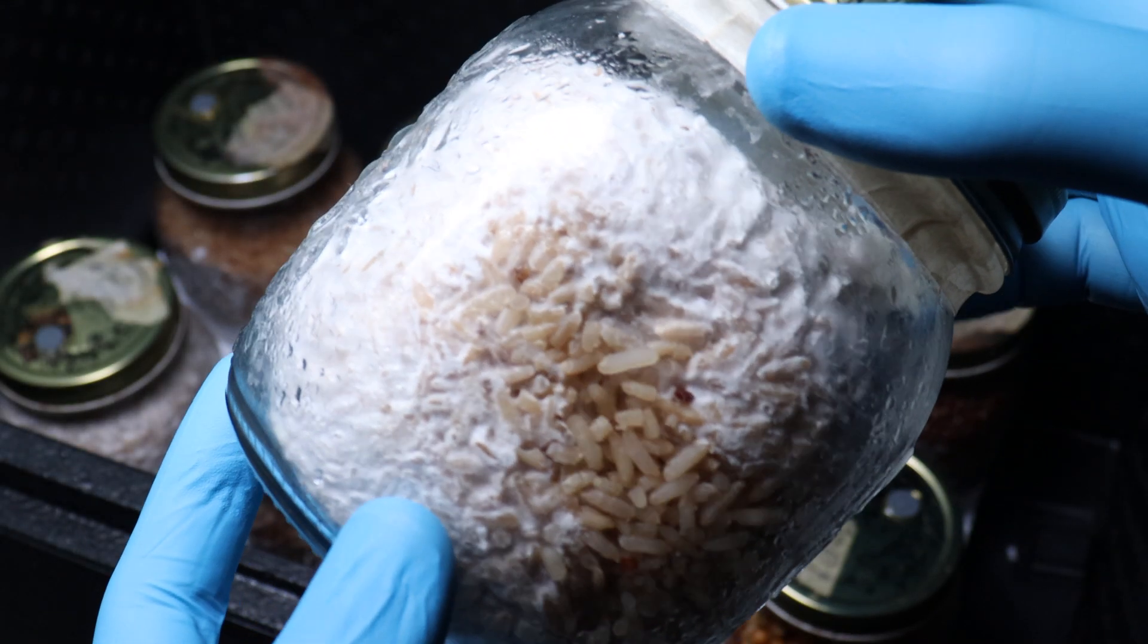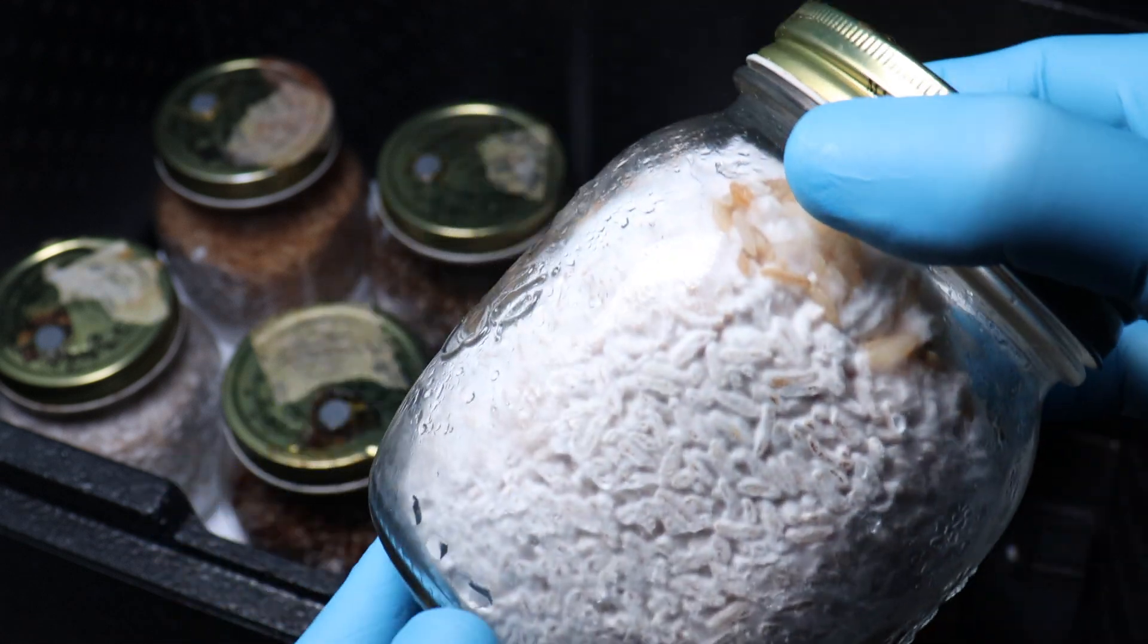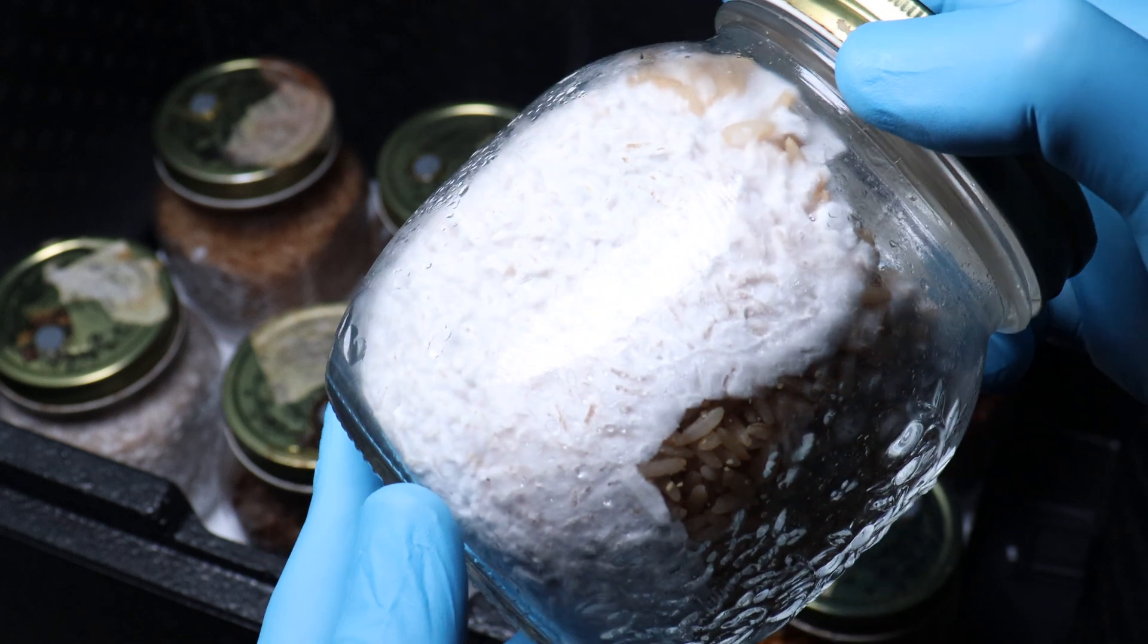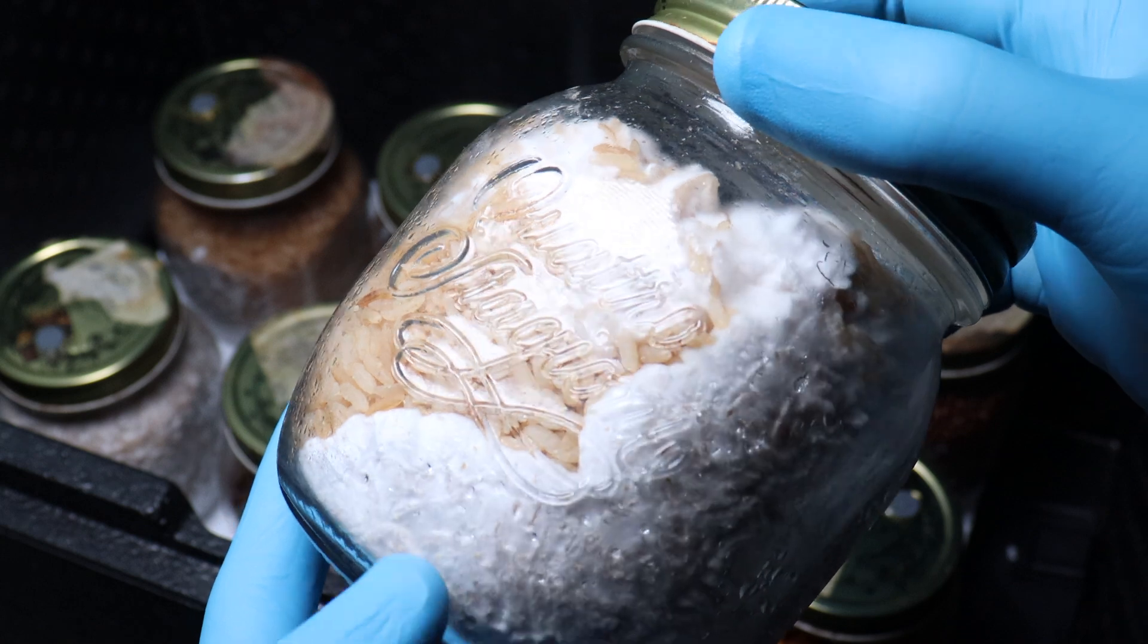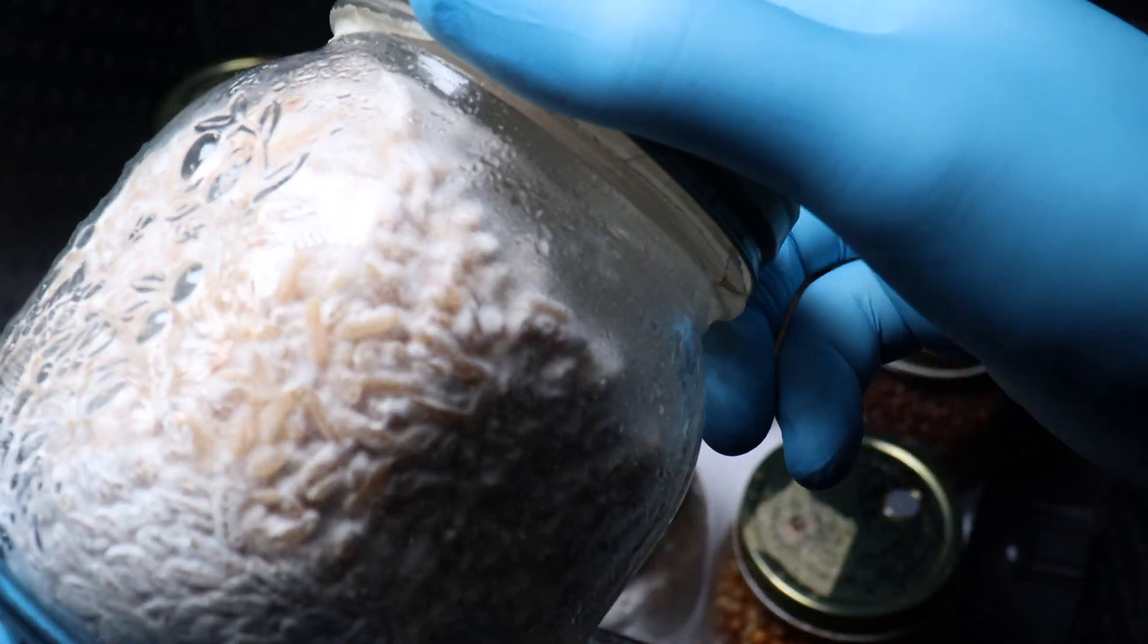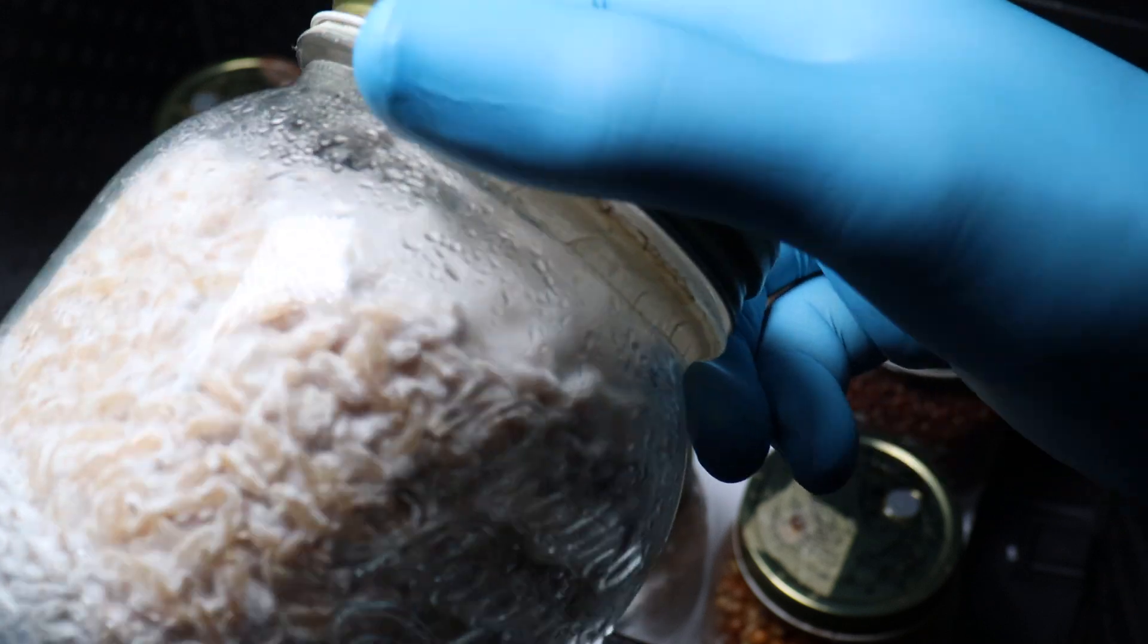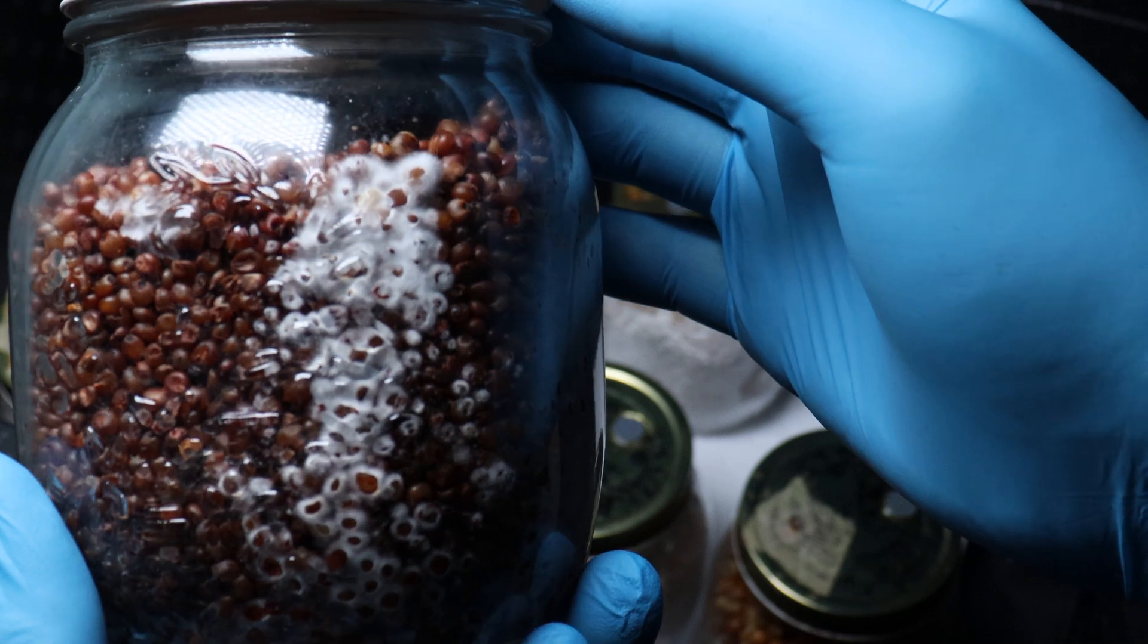And here we can see some of my spawn. Some nice rice there. Looking pretty nice. Colonizing well. I run this incubator at around 22 degrees Celsius, and I find that works really well.